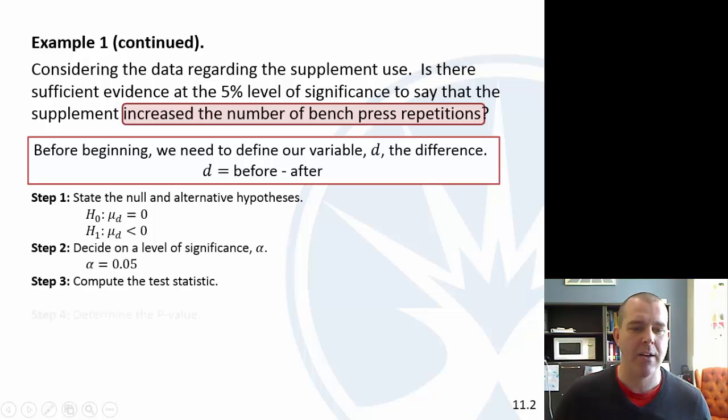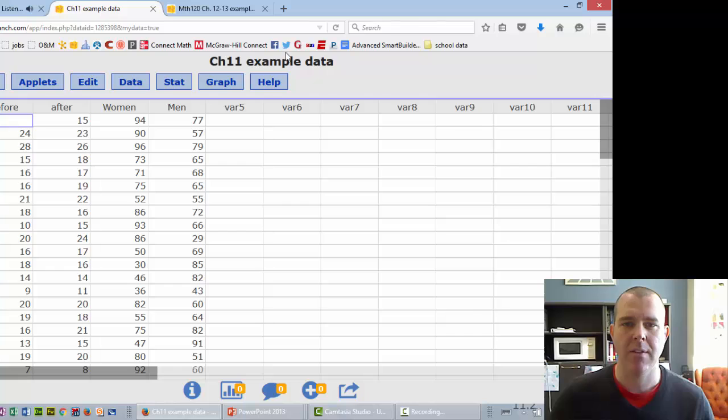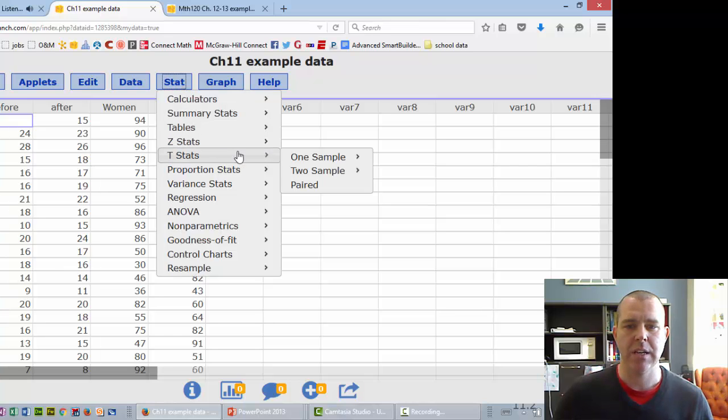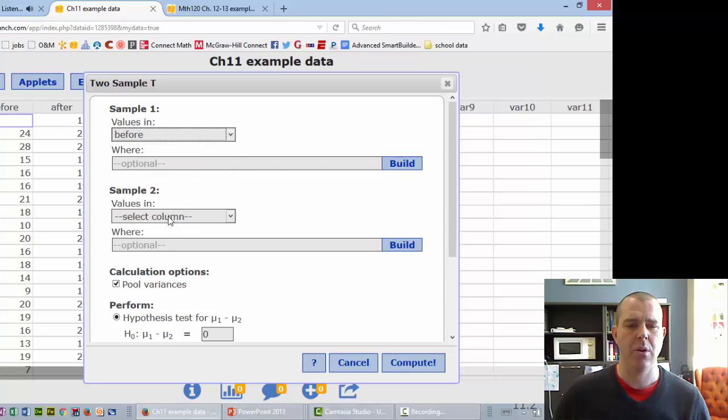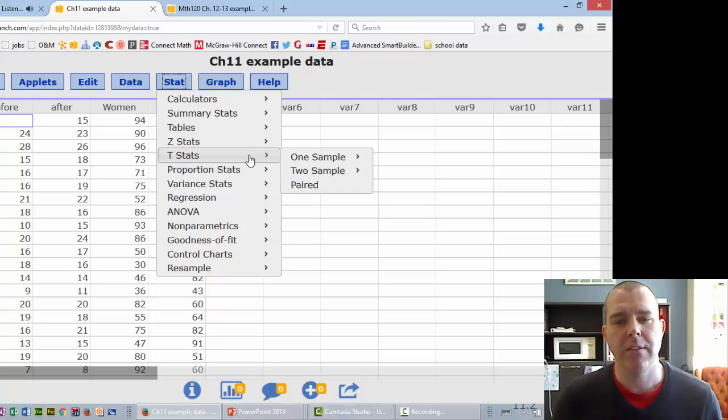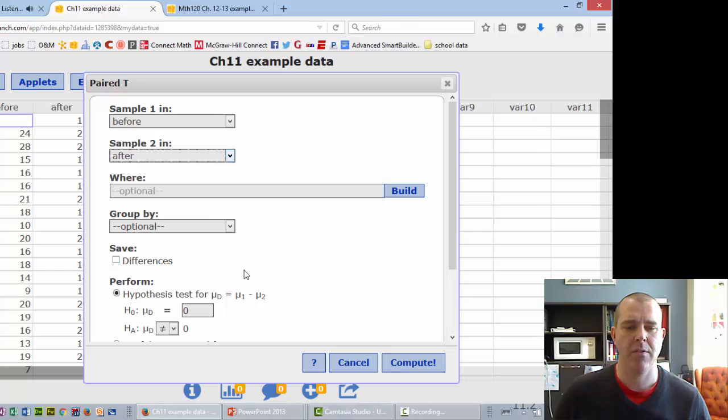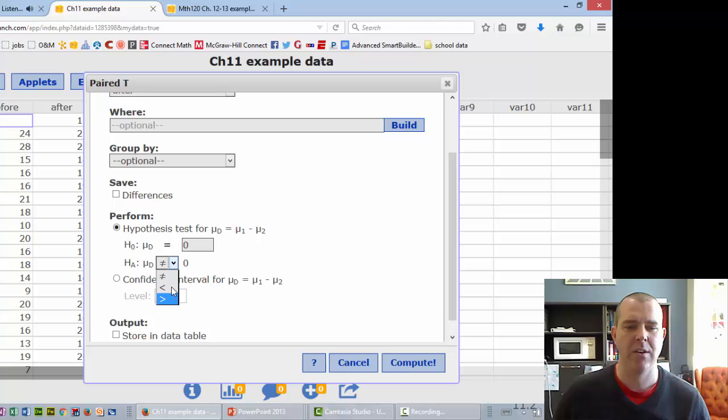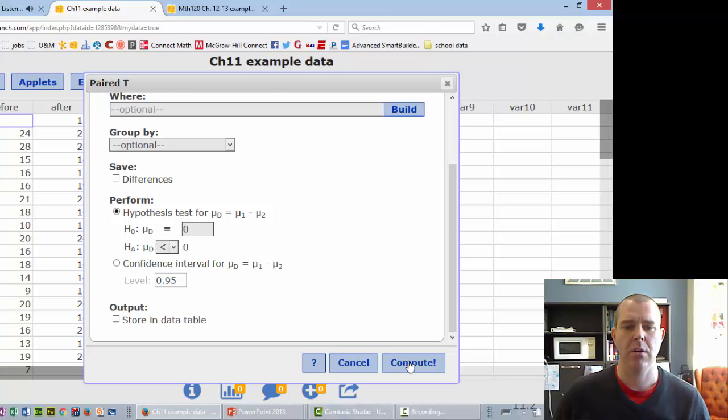Once we have that, then the same steps: alpha, test statistic, p-value. Let me go back over here. I've got this data up. You should have this in the chapter 11 example data. We've got before and after. So we're going to do stat, t-stats, paired. I need them to be paired. Before, after, I am doing a hypothesis test, and I think the difference is negative, right? Compute.